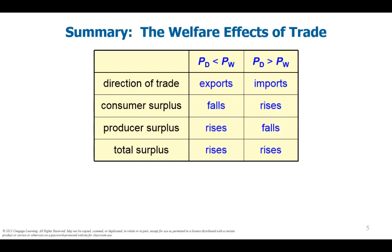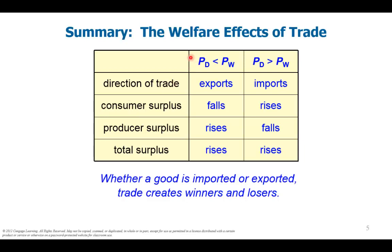To summarize: P sub D is our domestic price, P sub W is our world price. If the domestic price is less than the world price, we expect the country to export — consumer surplus falls, producer surplus rises, total surplus rises. If the domestic price is greater than the world price, we expect the country to import that good — consumer surplus rises, producer surplus falls, total surplus still rises.